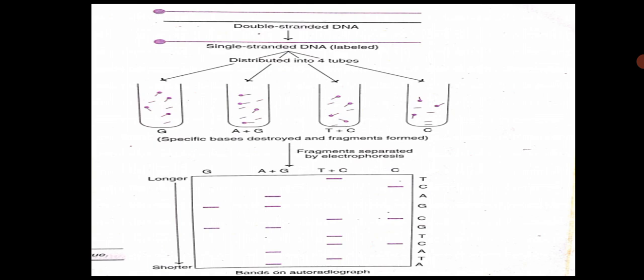By this we can find out the order of the bases in the nucleotide sequence. This is the Maxam and Gilbert method.